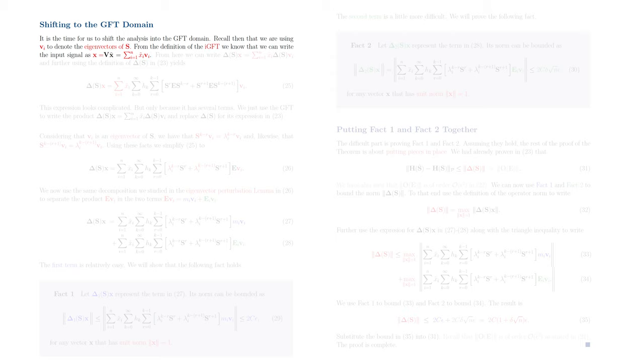This product can be alternatively written as the summation of Xi tilde times Vi, where the Xi tilde are the components of the GFT of X, and the Vi are the eigenvectors of S, as we have just recalled.